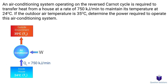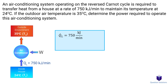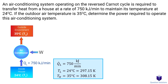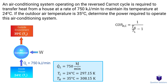Let's take a look at this question, where we have an air conditioning system running on a reverse Carnot cycle. We need to figure out the power required to operate it. The air conditioner needs to remove 750 kJ of heat every minute from the house to maintain it at 24 degrees Celsius. So that's our QL and TL. The outside air temperature is 35 degrees Celsius, so that's our TH. We can start by figuring out the COP of this air conditioner. Let's plug our values in and we get a COP of 27.